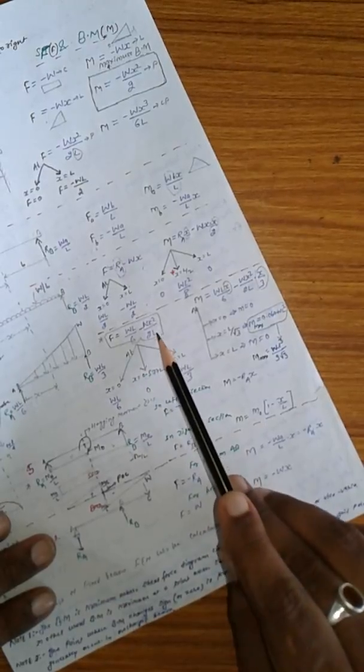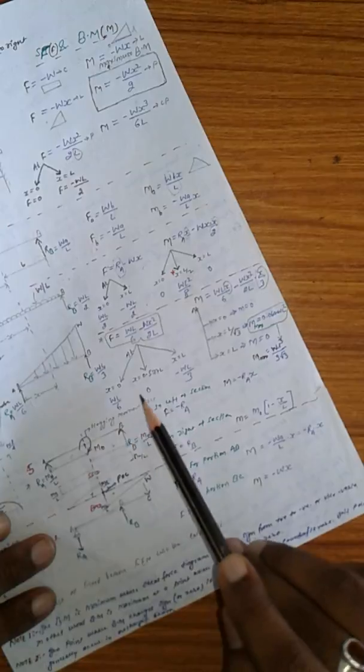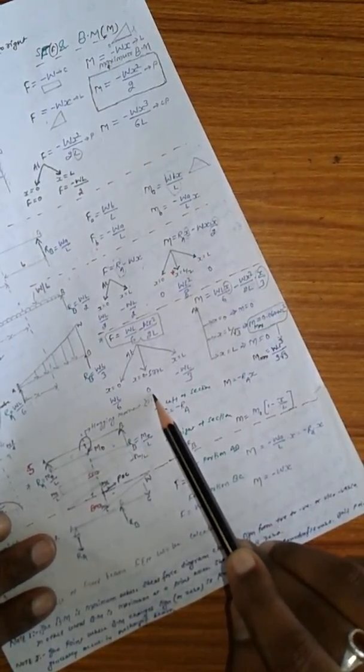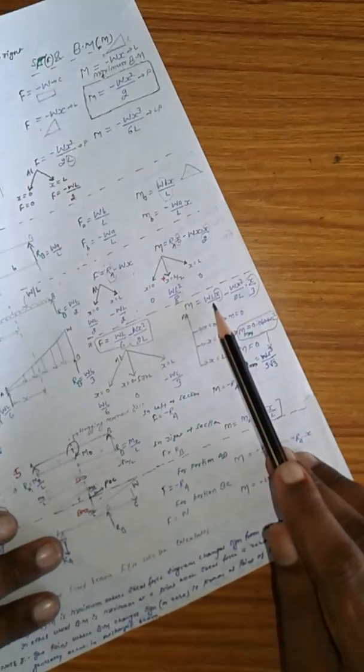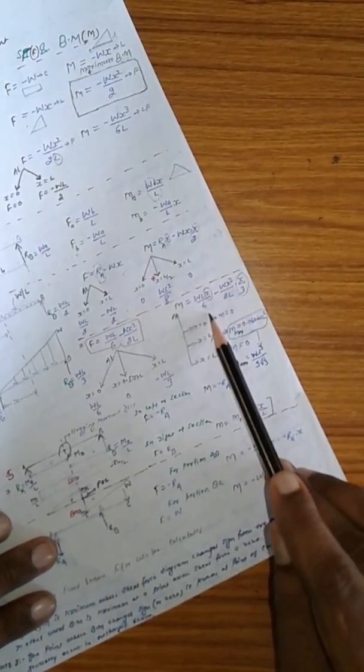In this case, general equation for shear force is wL upon 6 minus wx squared upon 2L. At x equal to 0, wL by 6. At x equal to 0.577L, value of F is 0. And at x equal to L, minus wL by 3. And general equation for bending moment is wLx upon 6 minus wx squared upon 2L into x by 3.